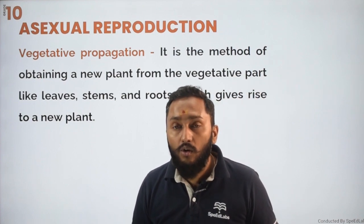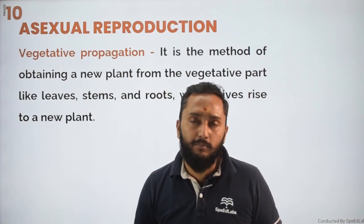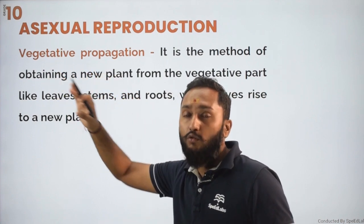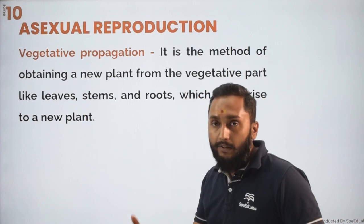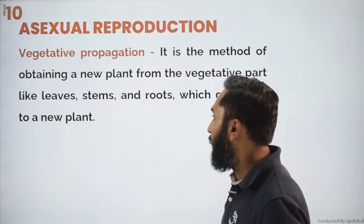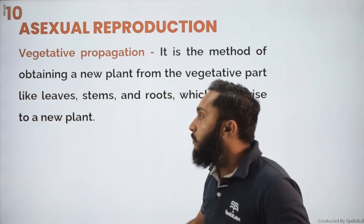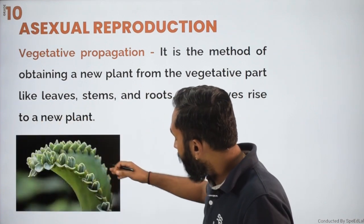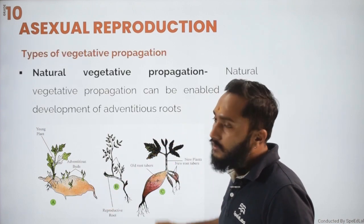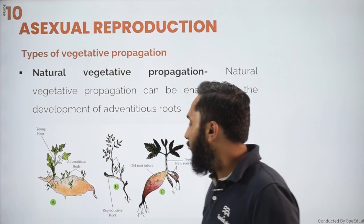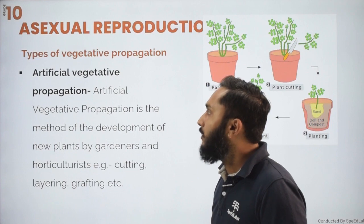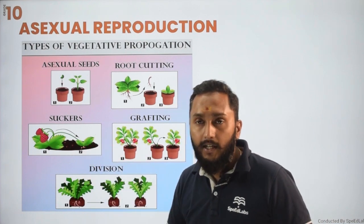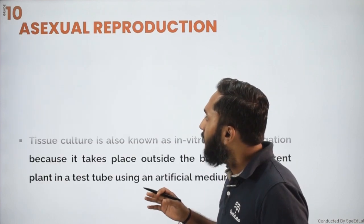After this is vegetative propagation, which can occur naturally as well as artificially. It is a very important method to grow more plants in a short time duration, and it is effective for plants that are not able to develop or grow seeds. With the help of vegetative parts like leaves, stem, and root, you can develop a new plant. In artificial vegetative propagation, methods include grafting, cutting, and layering.